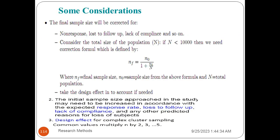In this case, if you have a problem, you can calculate the population proportion and the population mean in the precision approach. This population proportion is a correct model. That is the source population proportion. The total size of the population will be corrected for non-response, lost to follow-up, and lack of compliance.